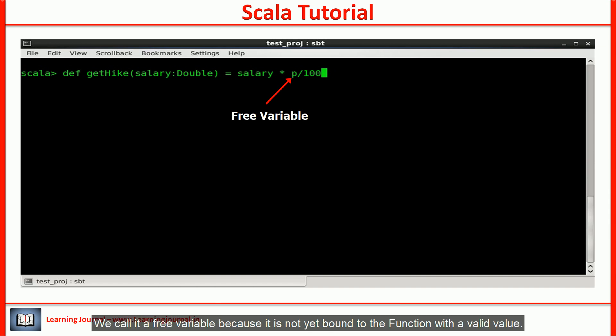We call it a free variable because it is not yet bound to the function with a valid value. The function doesn't know the value for p. Now, since you understand the free variable, let me give you a definition of a closure.